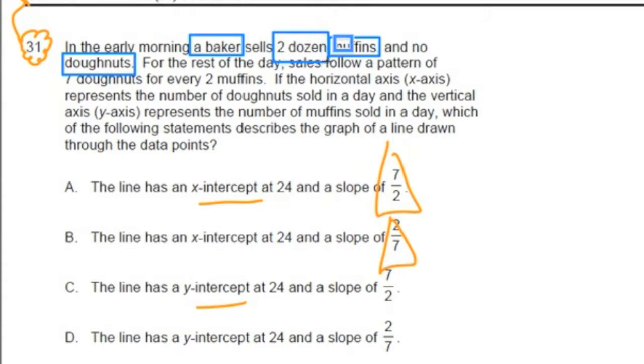Now, it does tell us in this central image that we're dealing with two dozen muffins. If you want to, you can right away convert two dozen muffins. Well, one dozen is 12 muffins. Two dozen would be 24 muffins. I kind of like to switch this over right away.